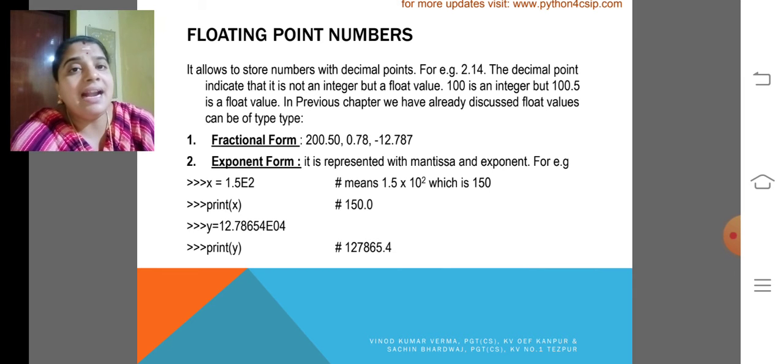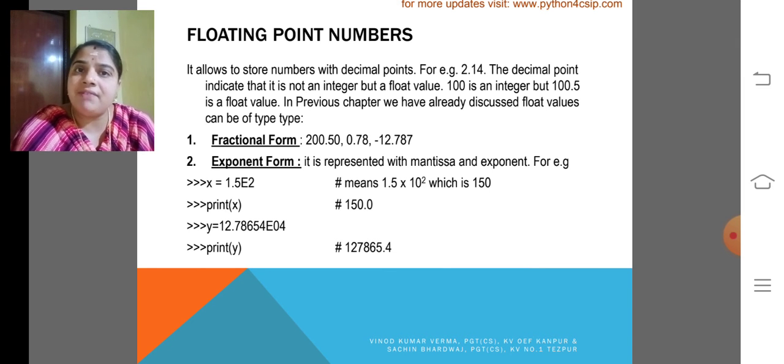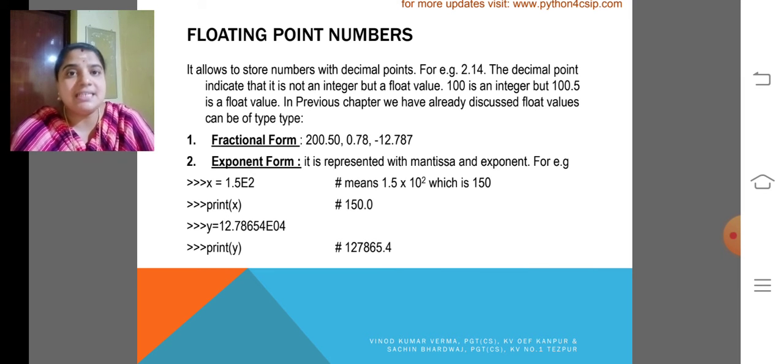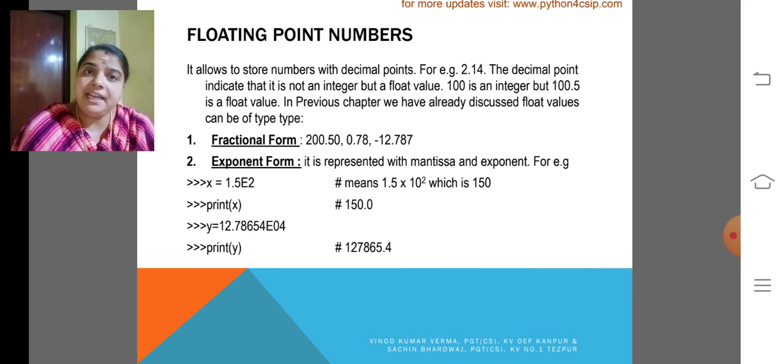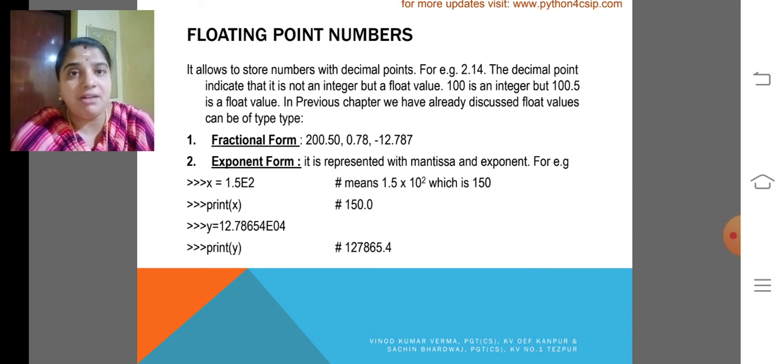Here I had given one example, 2.14. The decimal point indicates that it is not an integer but a float value. If you are giving any number with a dot, then the interpreter takes it as a floating point value. So, 100 is an integer but 100.0 or 100.5 is a float value.